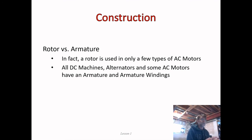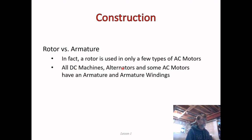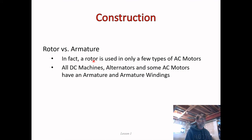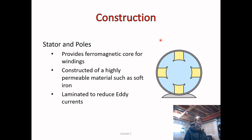Every generator, whether it's an AC generator or DC generator, will have an armature. DC machines, AC alternators, and some AC motors definitely have armatures and armature windings. The conversation moving forward is going to focus on the armature — we're just about done talking about the rotor, but you'll hear that term a lot, so it's important to understand it.